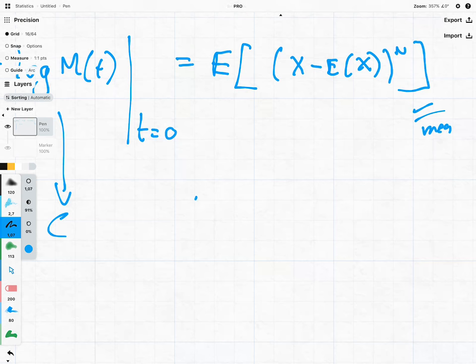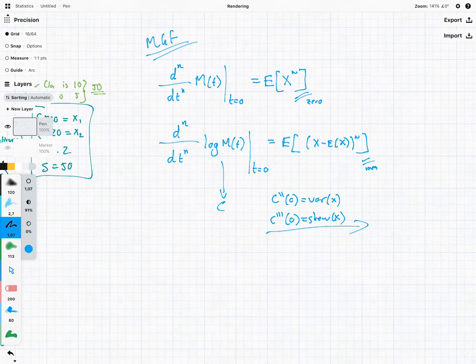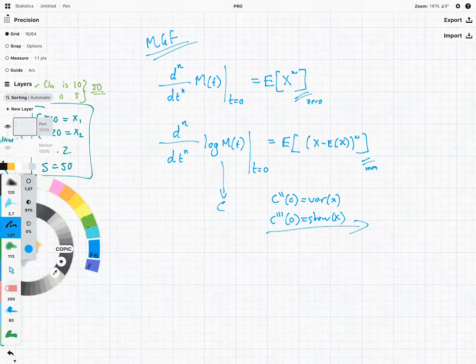We came up with these really cool results where straight away you take the second derivative, set it to zero, and you've got the variance. You take the third derivative, you set it to zero, and you've got skewness. And it's an amazing way to almost leapfrog all the mathematics and cut straight to the chase. So that is a very quick recap on moment generating functions.